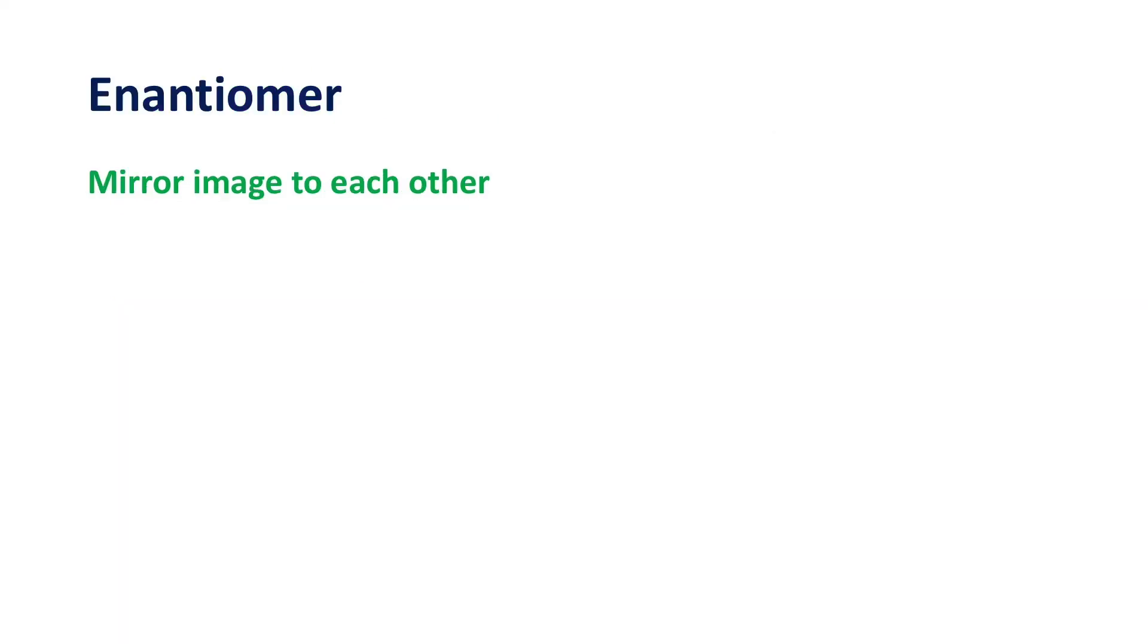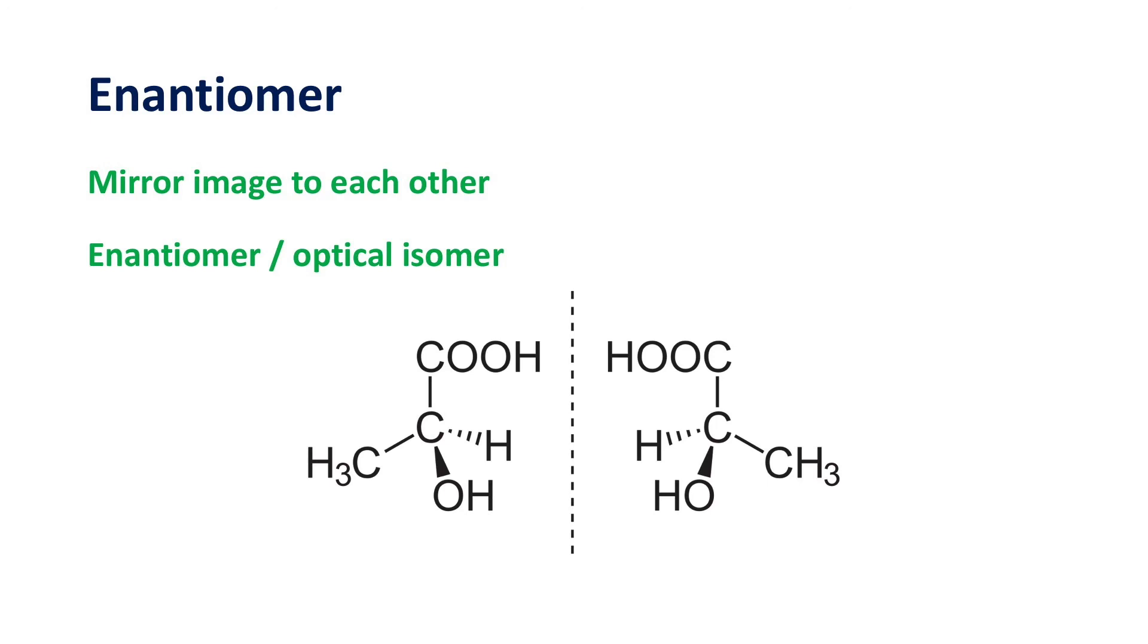For those molecules are mirror images to each other, they are called enantiomers or optical isomers. For example, these two molecules are enantiomers.